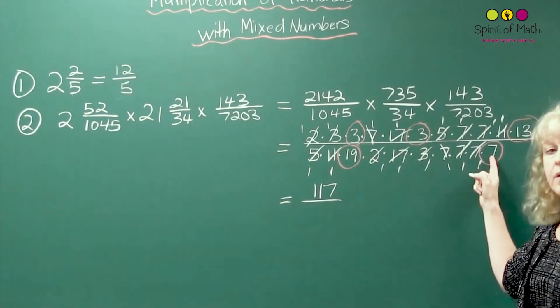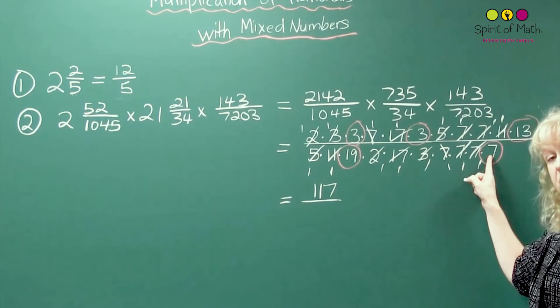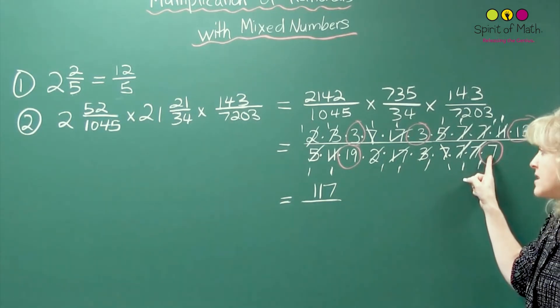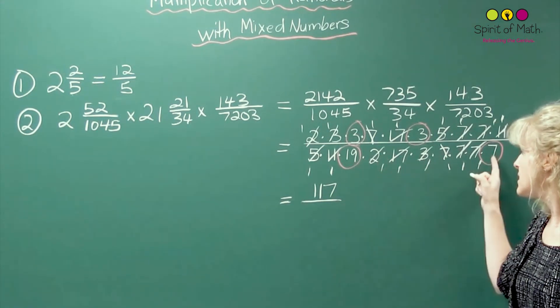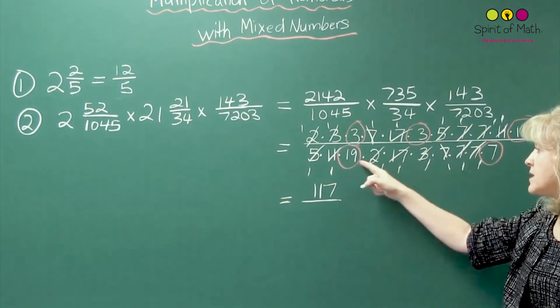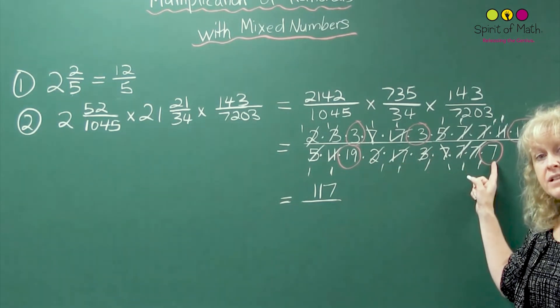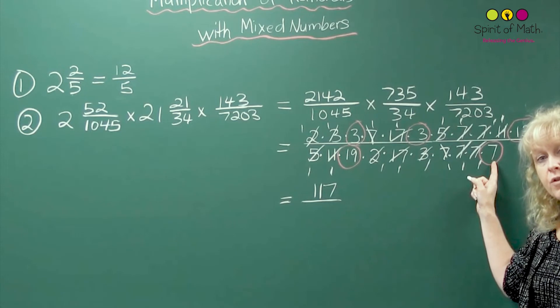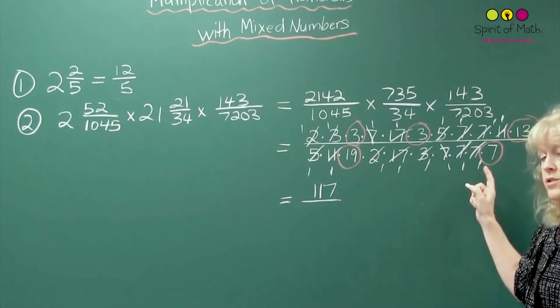Now, 19 times 7, again, maybe some of you can do it in your head. You know that if you have 20 sevens, that's 140. So 19 sevens is 7 less than 140, and that would be 133.